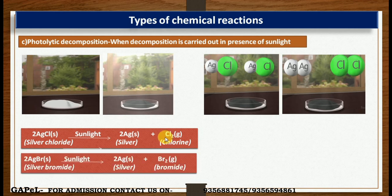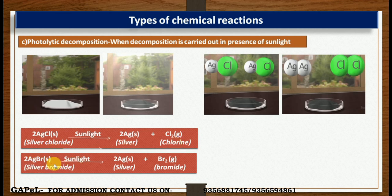A second example is silver bromide (AgBr). In the presence of sunlight, silver bromide decomposes into silver (Ag) and bromine (Br2). Silver chloride and silver bromide are usually stored away from light. Silver bromide is especially used in photography.